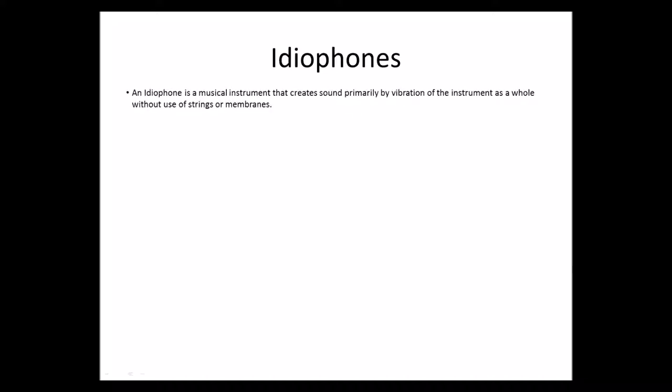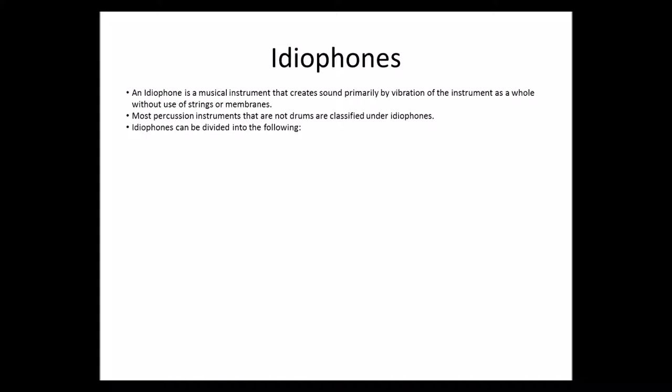An idiophone is a musical instrument that creates sound primarily by vibration of the instrument as a whole without the use of strings or membranes. Most percussion instruments that are not drums are classified under idiophones. Idiophones can be divided into the following.